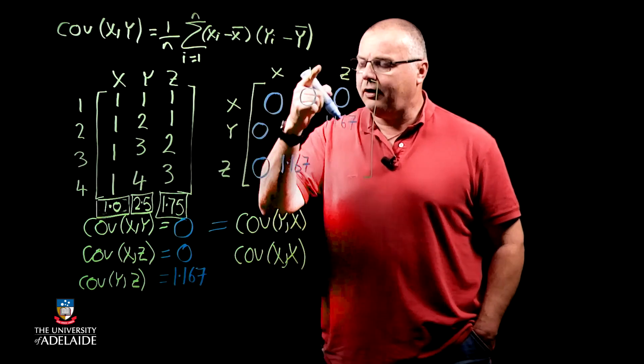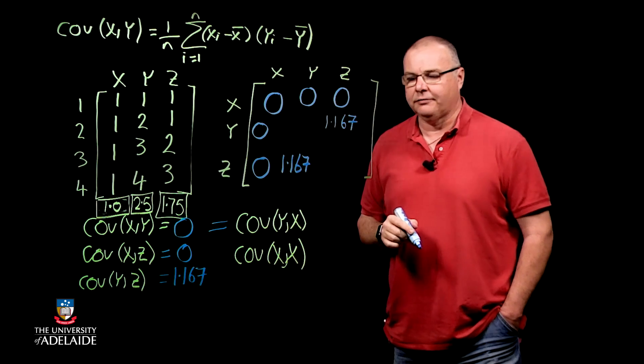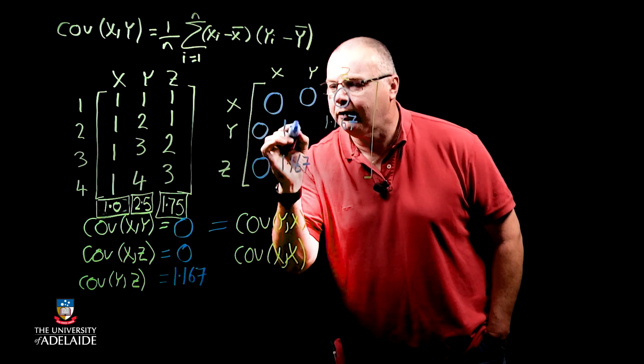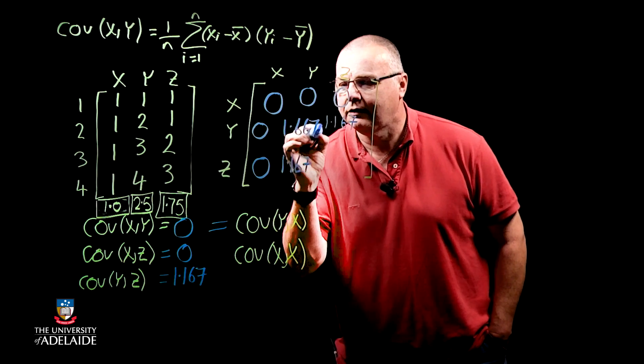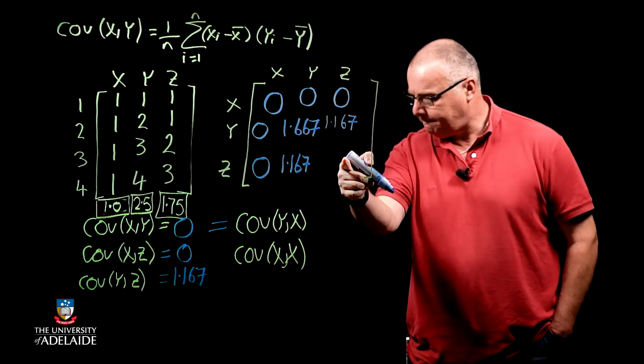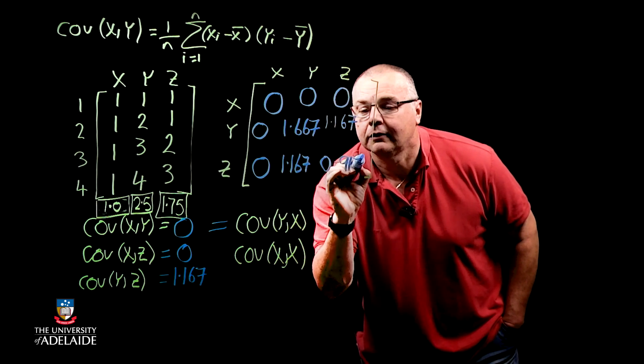This one here, this is the covariance of y and y. So it's the variance of y. I'll give you a second. Have a go at calculating it yourself. Hopefully you've got 1.667. And finally, this last one here is the variance of z. Have a go. 0.917.